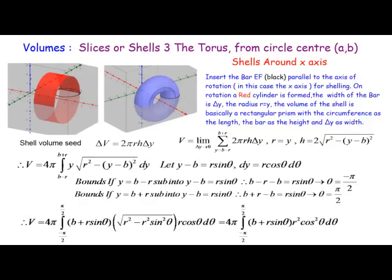Here we have the right page. When doing shells, the volume seed is δV = 2πrh δy as usual. We have r = y and h is what we worked out before. We have to do a bit more work on the integration — before they were just quarter circles, but now with that y at the front of the expression we need to do a trig substitution.